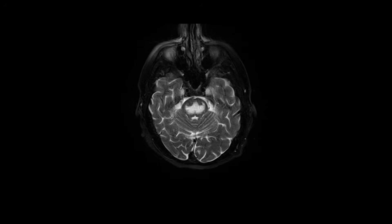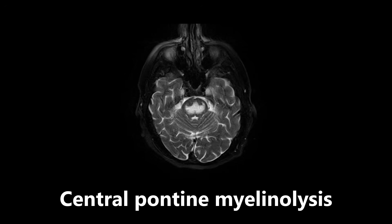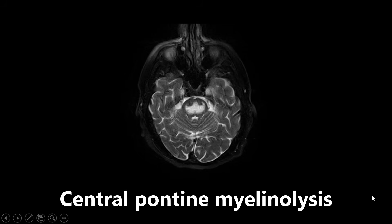This last image is an example of central pontine myelinolysis, also known as osmotic demyelination syndrome, seen here on a brain MRI. This condition occurs due to rapid correction of hyponatremia. The main finding is bright enhancement of the pontine white matter — it is not supposed to be this enhanced. If you see an MRI that is absolutely lit up in this region, think central pontine myelinolysis, also called osmotic demyelination syndrome.